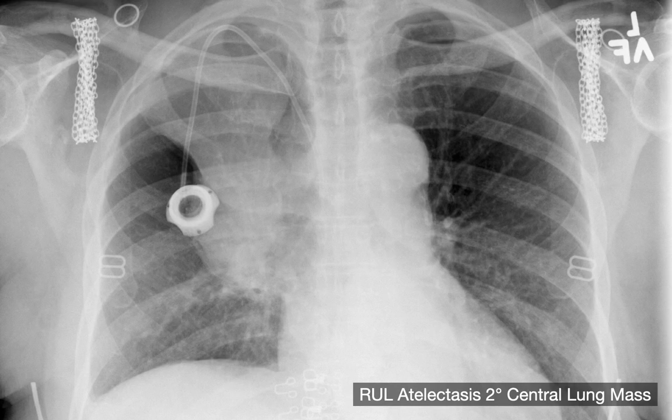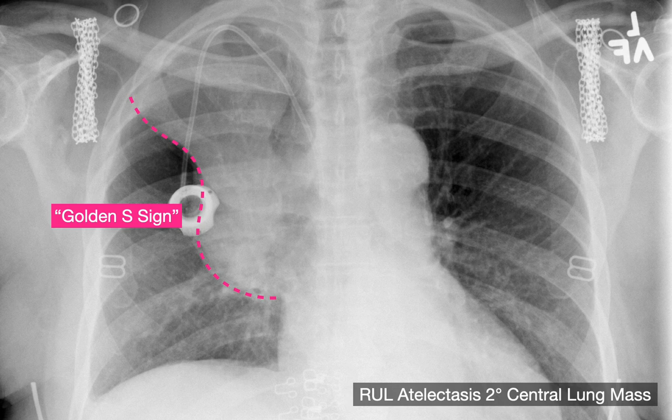When right upper lobe atelectasis occurs in the setting of a mass causing it — as in cancer — you see an S-shaped interface at the junction between the collapsed lobe and the mass. This is traditionally called the Golden S sign.